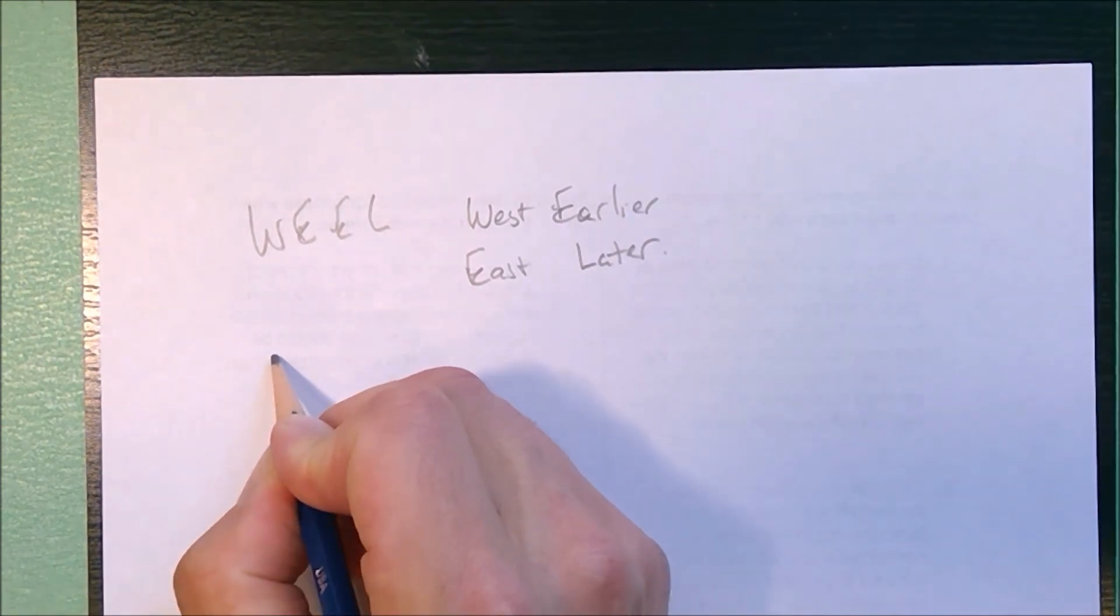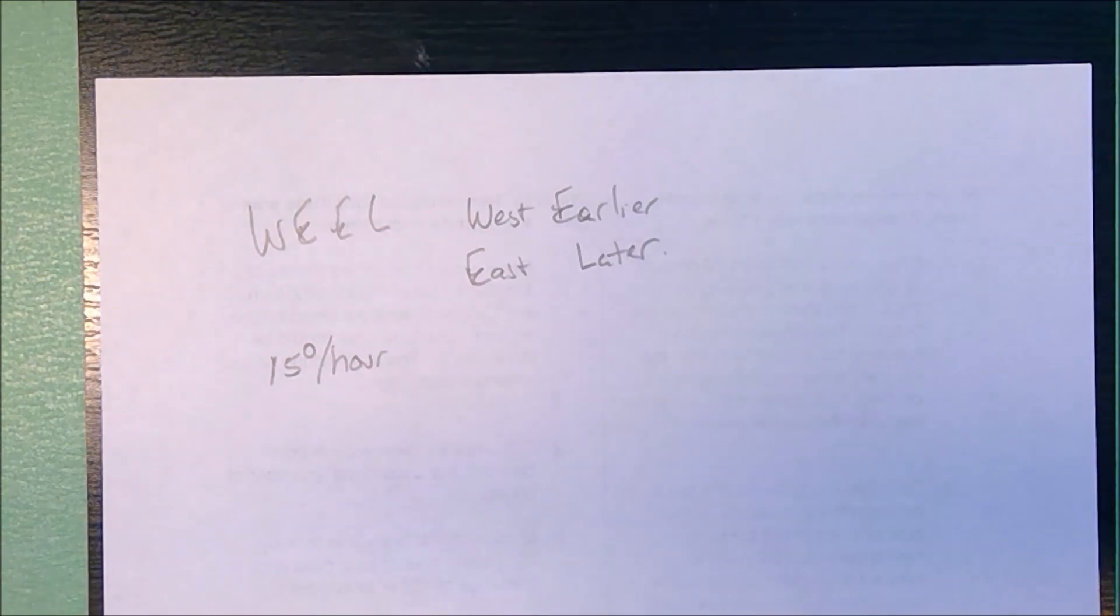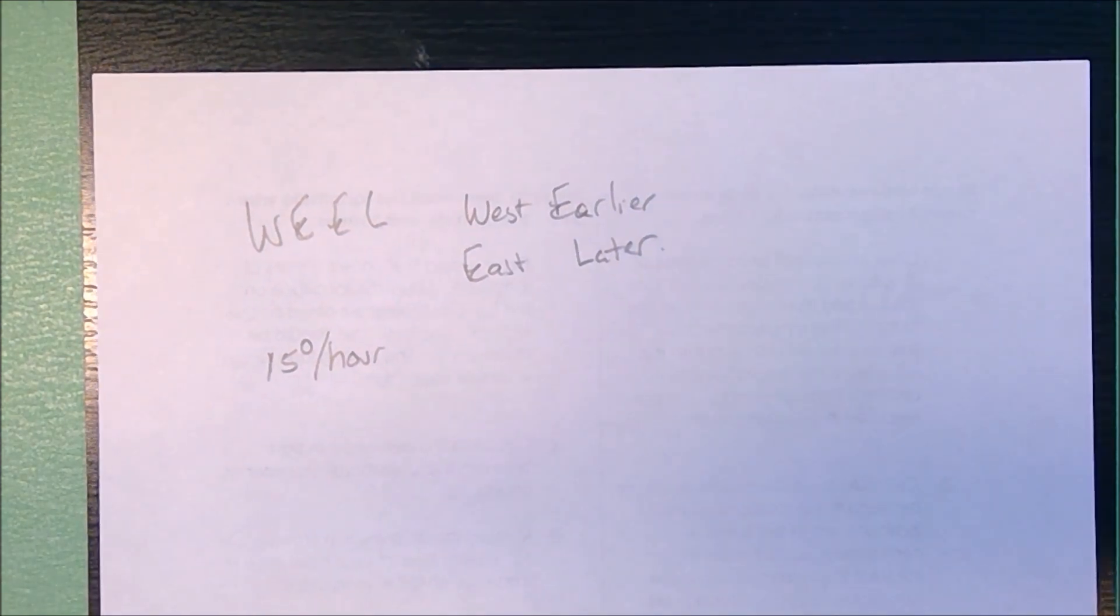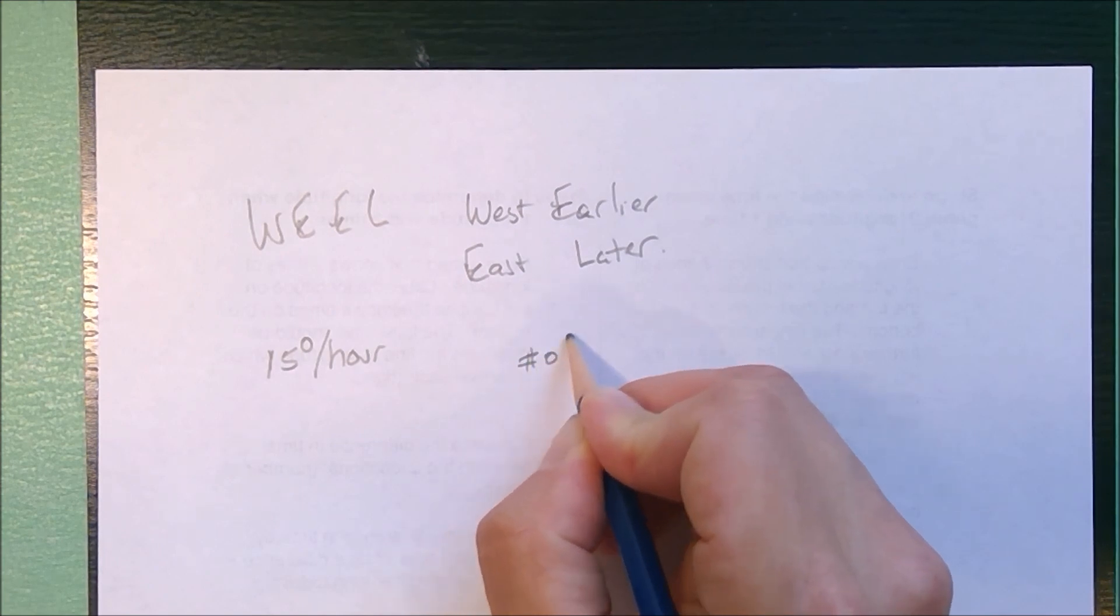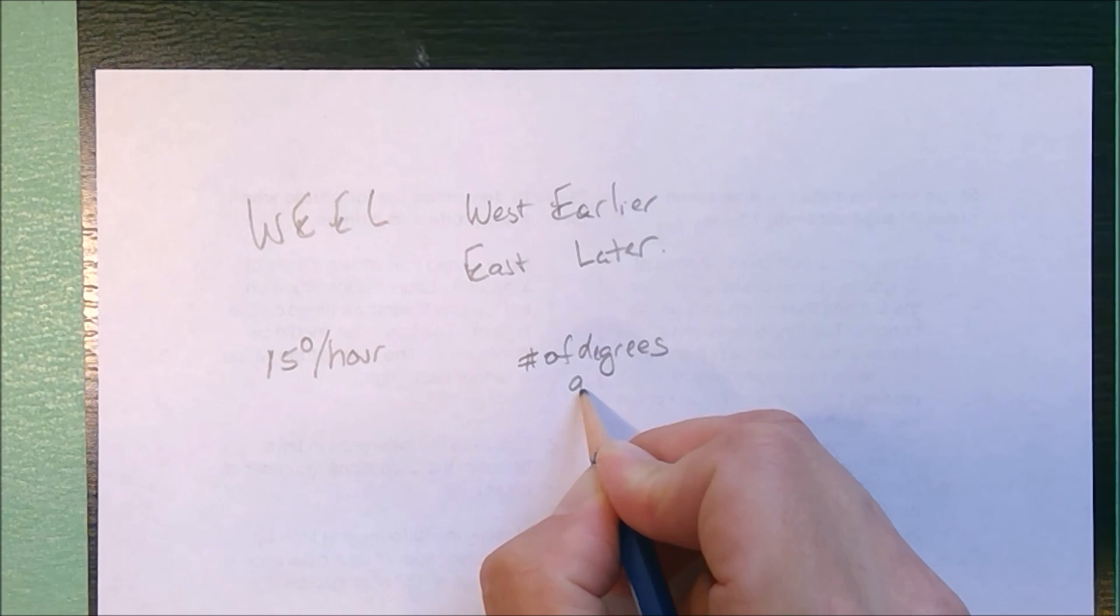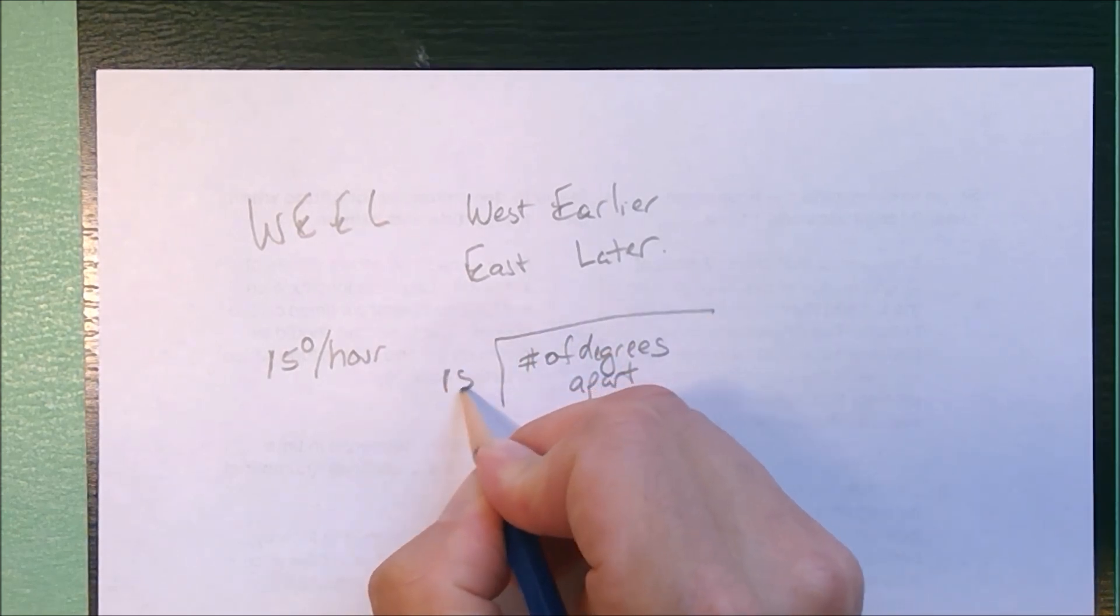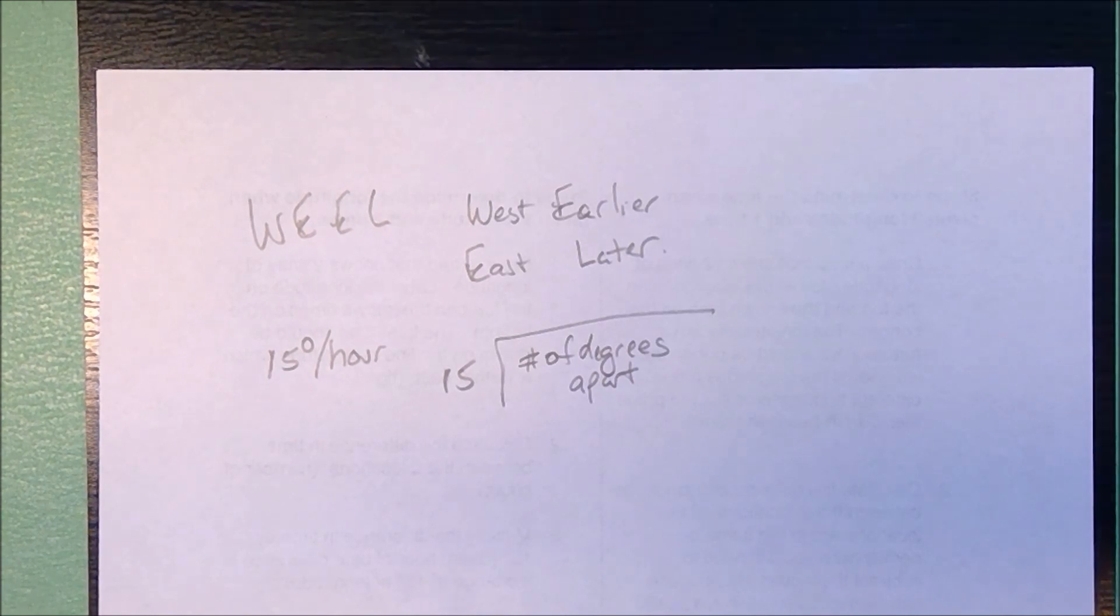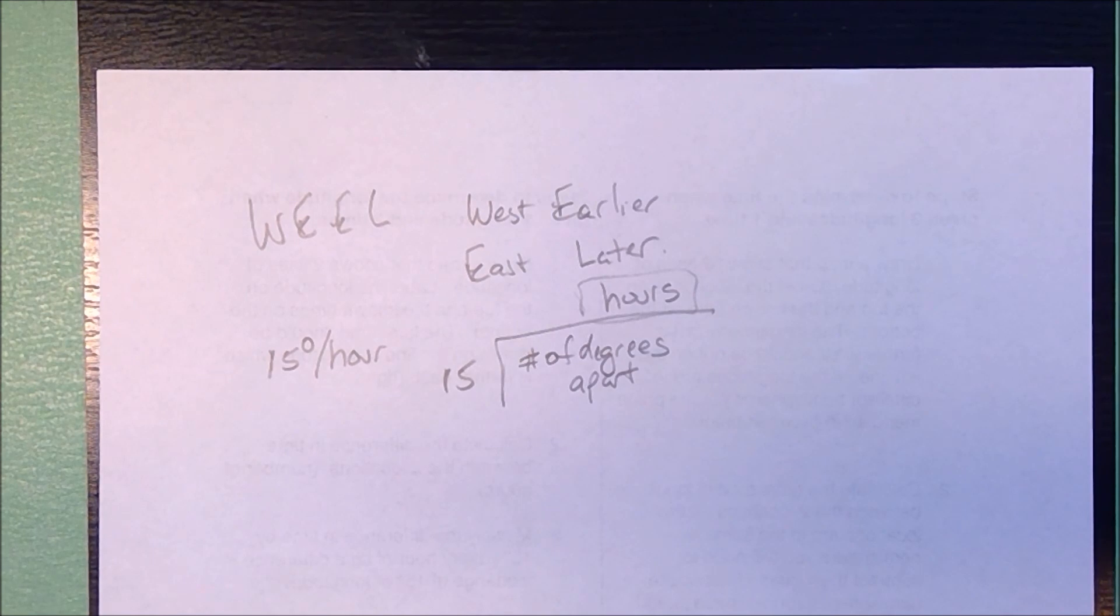Another key piece of information: the earth's rate of rotation is 15 degrees per hour. So every 15 degrees in longitude is a one hour time change. If I know the number of degrees apart, I'm going to take that and divide by 15, and that tells me how many hours apart my two locations are.